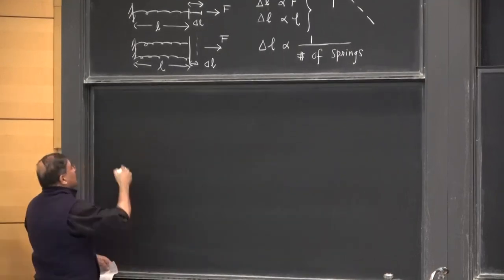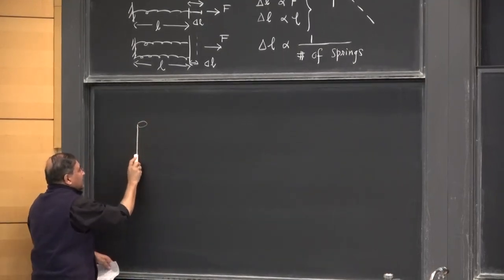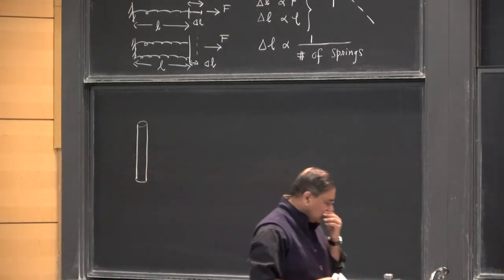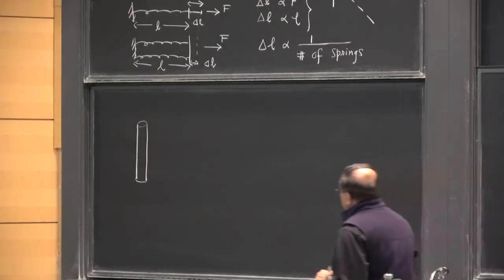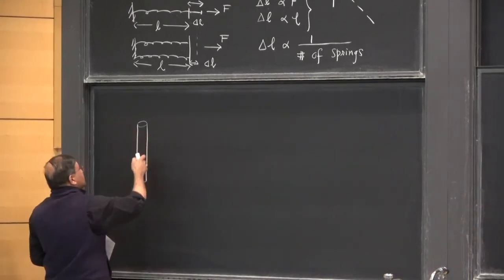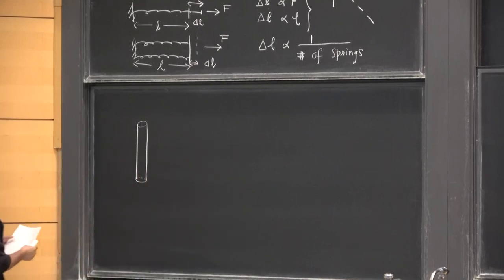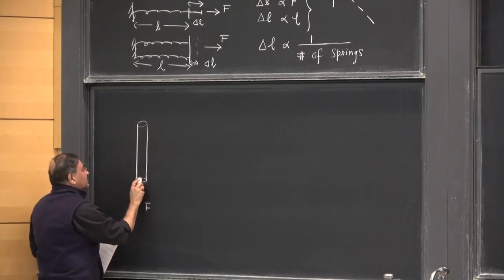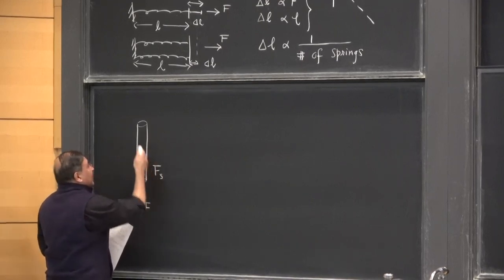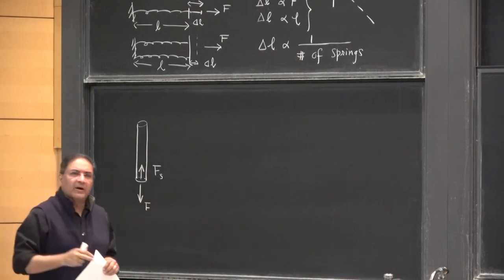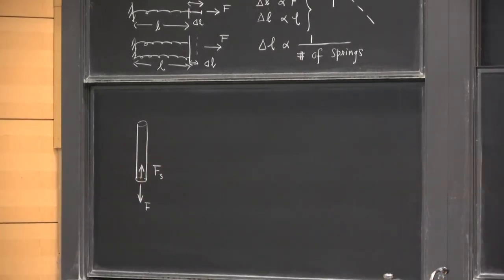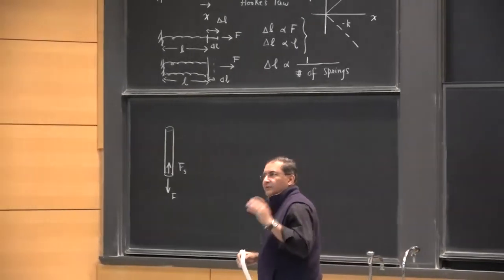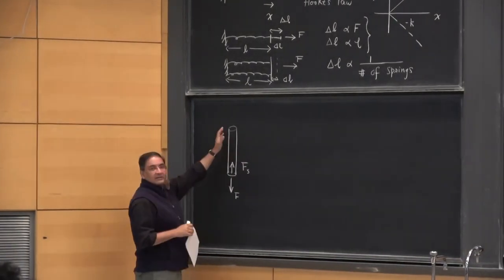Why did I start with springs? I started with springs basically because I want to get into a discussion of something much more complex, like a wire. This is a blown-up cartoon of a wire. Whatever this wire is made of, it's got zillions of atoms, and it's roughly cylindrical. I can imagine at the very simplest level that this wire is made out of millions and millions of springs — just like I had there.